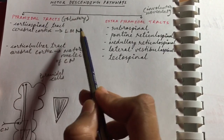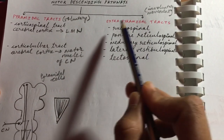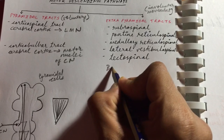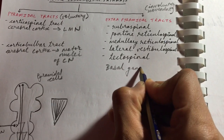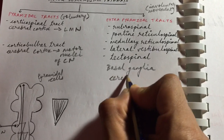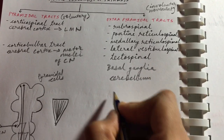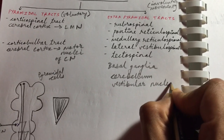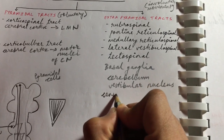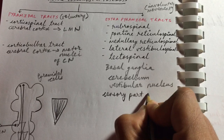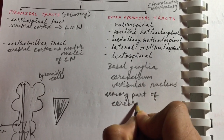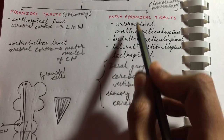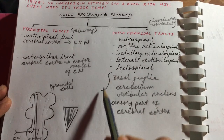All the tracts of the extra-pyramidal system are also controlled and regulated — the main modulation and regulation comes from the basal ganglia, cerebellum, vestibular nucleus, and the sensory part of the cerebral cortex.